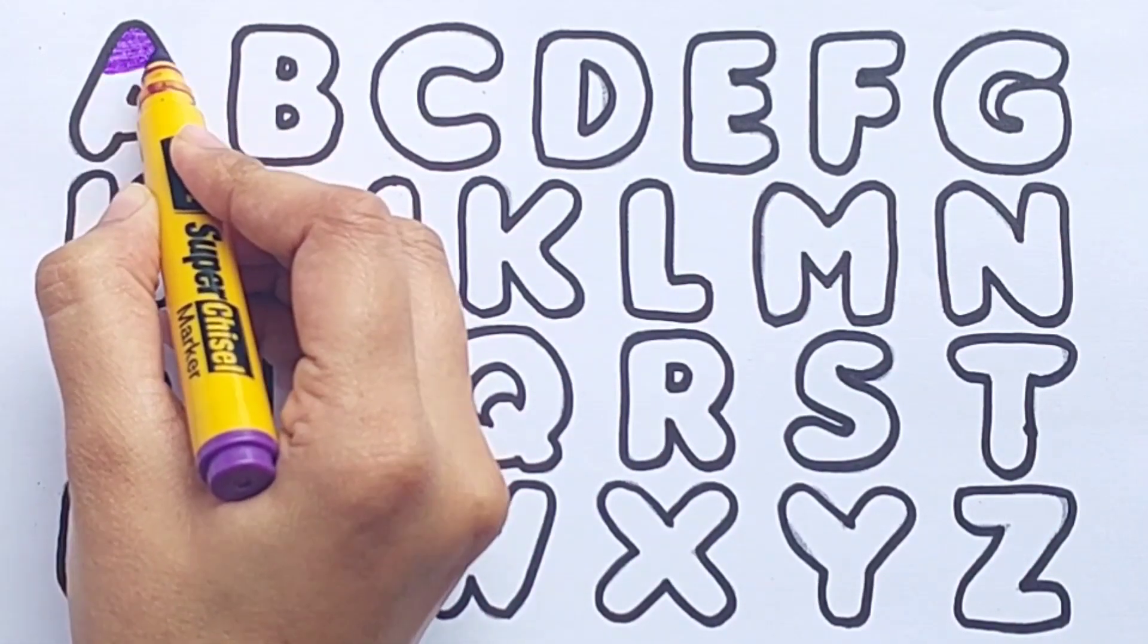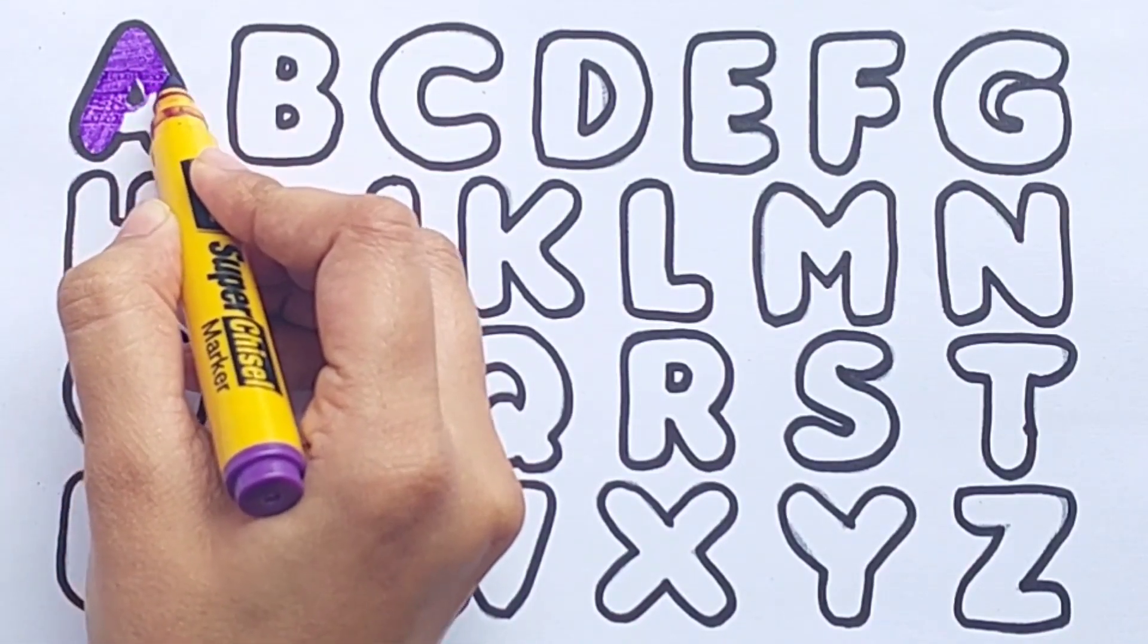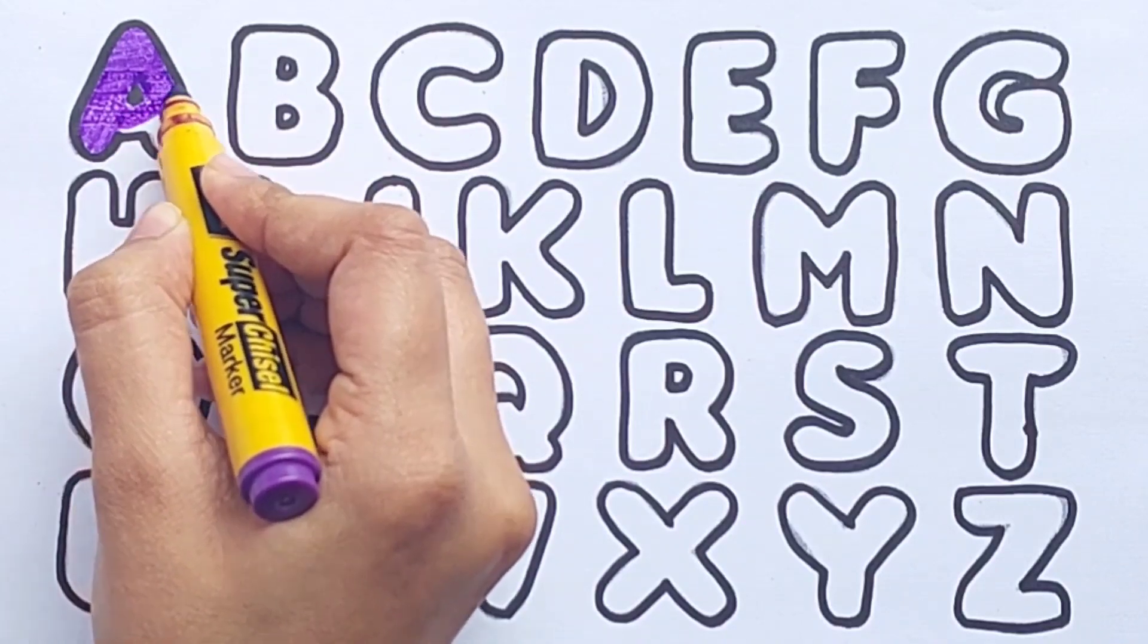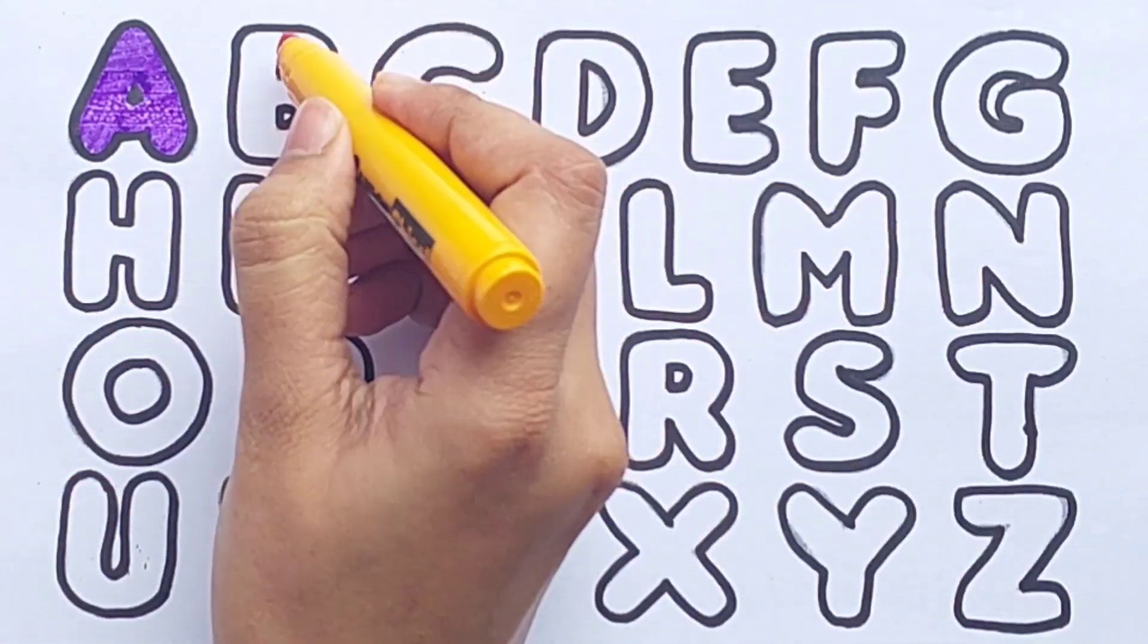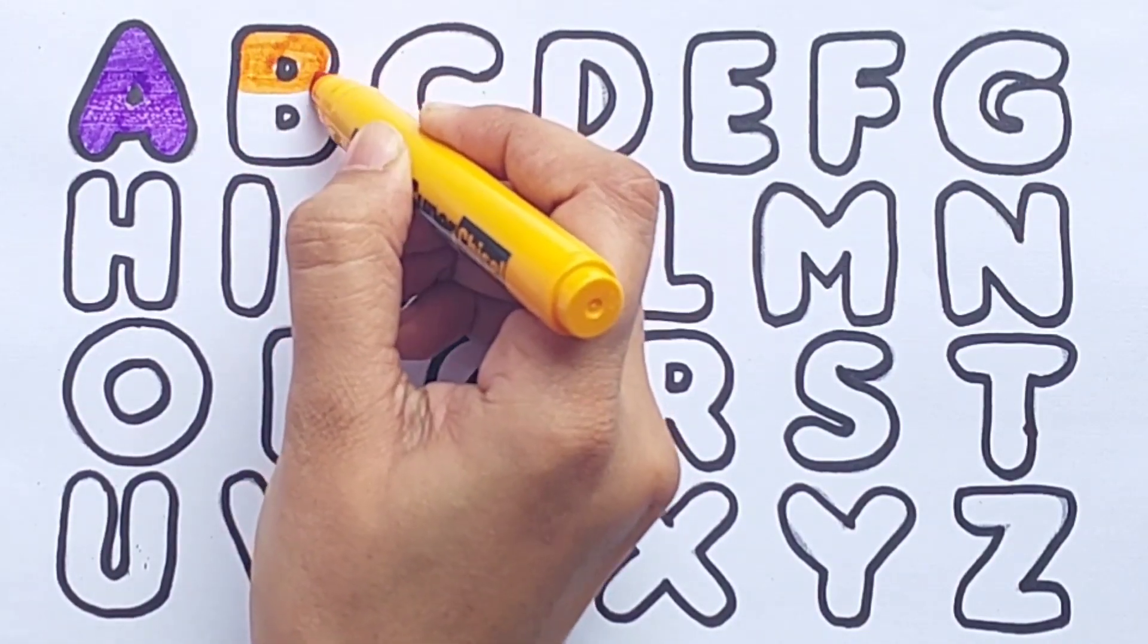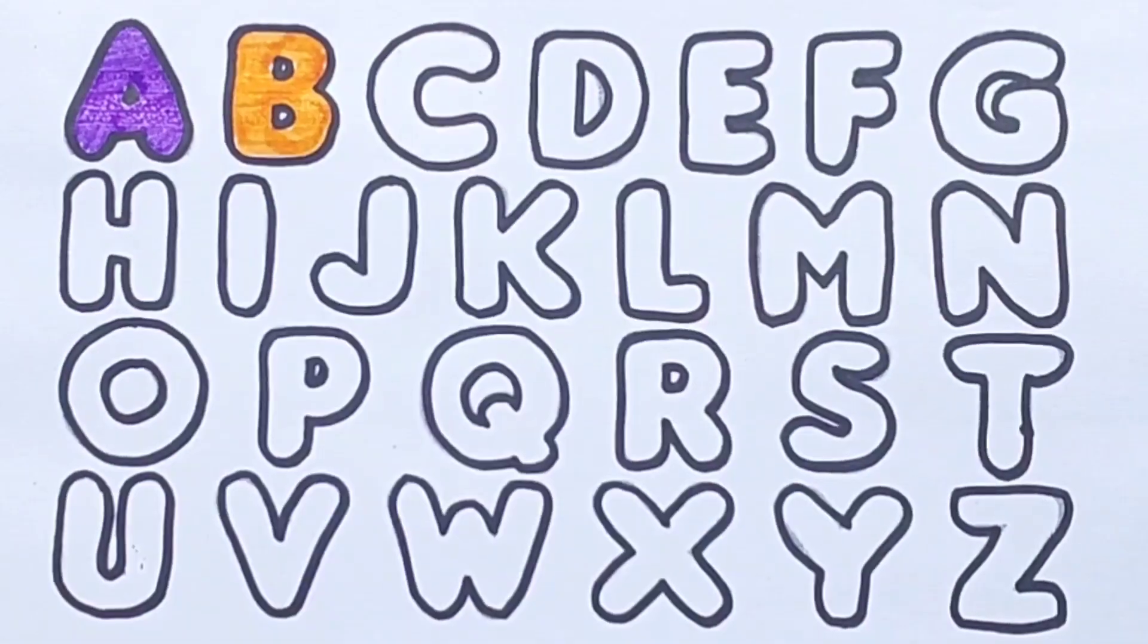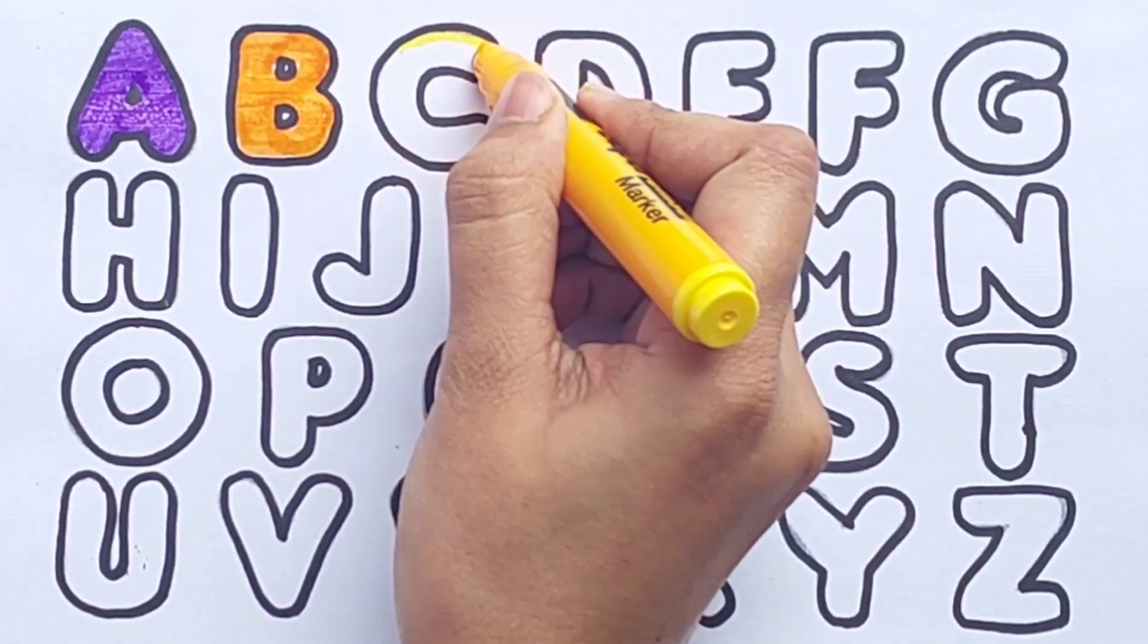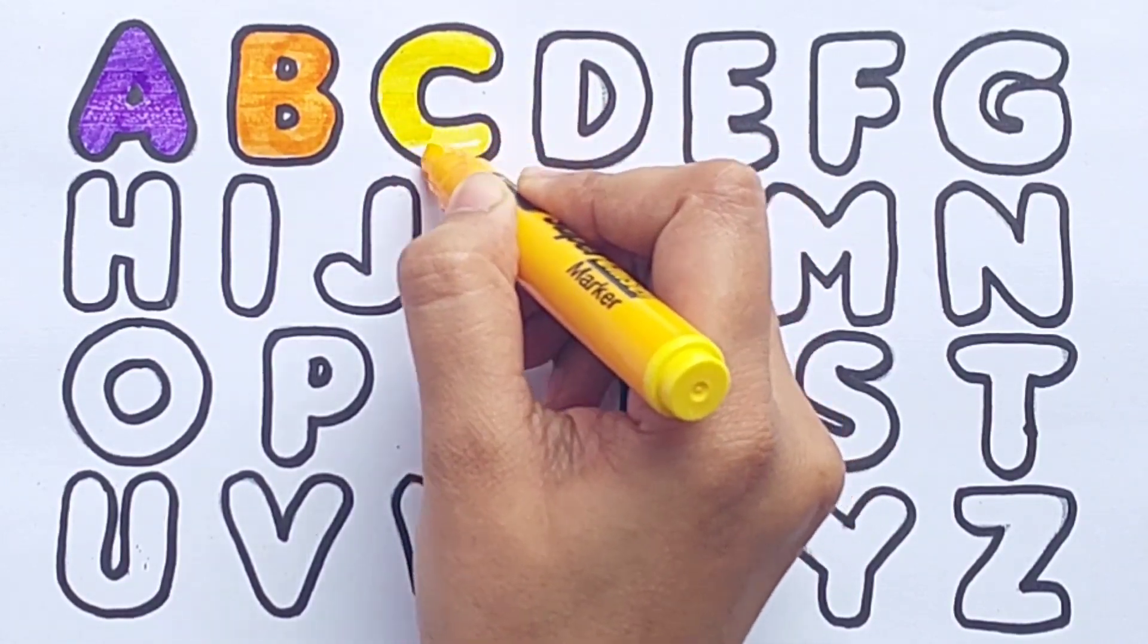A, A, A for Apple. Orange color. B, B, B for Ball. Yellow color. C, C, C for Cat.